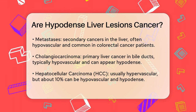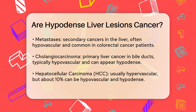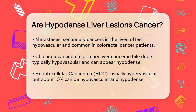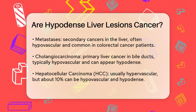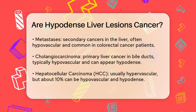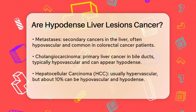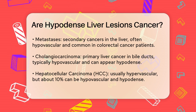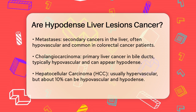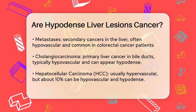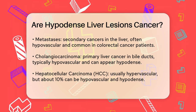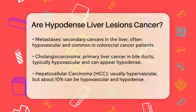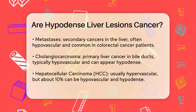Cholangiocarcinoma is a type of primary liver cancer that grows in the bile ducts of the liver. It is typically hypovascular and can appear hypodense, especially in the late arterial and portal venous phases. However, it may show delayed enhancement due to its fibrous stroma.